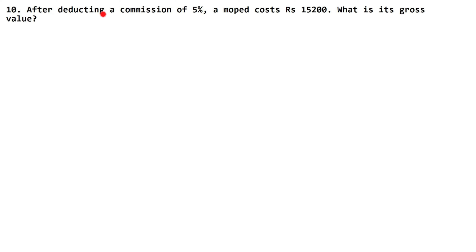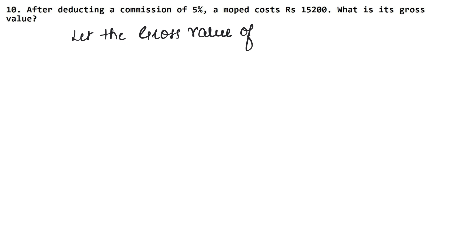In this question it says: after deducting a commission of 5%, a mob cost Rs. 15,200. What is its gross value? That means, what is the actual value before deducting the commission? So we let that value be X. Let the gross value of mob be X.